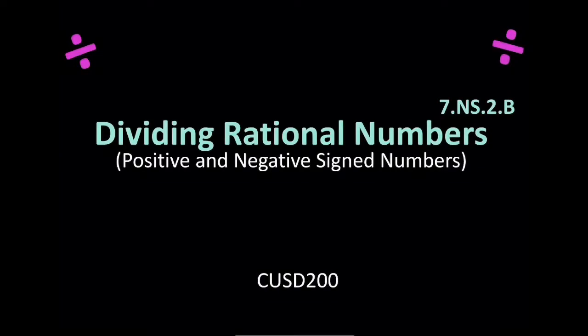All right, welcome back everybody. This lesson is going to cover how to divide rational numbers. Rational numbers can be integers, they can be fractions, they can be decimals, but we're just going to basically talk about positive and negative sign numbers. You know, they have a plus sign or a negative sign in front of it.